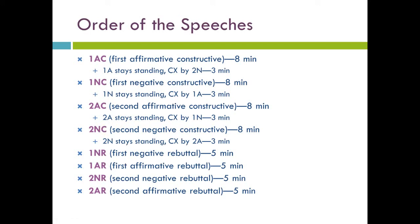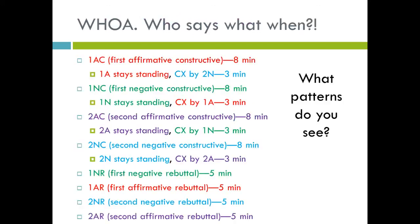The 2NC is the second negative constructive — just like all other constructives, it's eight minutes. Afterwards, the 2N stays standing and then gets cross-examined by the 2A. After that come the rebuttals, and there are no cross-exes. The rebuttal order is: 1NR, 1AR, 2NR, and 2AR.